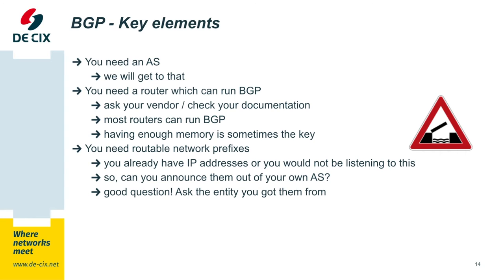You need routable network prefixes. You should already have some IP addresses assigned to you. Can you announce them on BGP? Please check. The easiest way, if you're not sure yourself, is to ask the party you got them from. If you got them from a local internet registry like RIPE or ARIN, the probability is quite high that you can route them. If you got them from another ISP, ask them — perhaps you cannot and you might need new IP addresses.